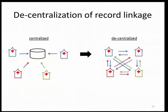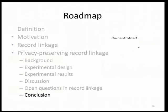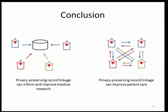Rather than doing a single record linkage at once, you have to do record linkage with each different institution from which you'd like to retrieve records, making it more computationally expensive. Adapting record linkage protocols to work in a decentralized setting is also an open challenge. In summary: in the centralized setting, privacy-preserving record linkage can inform and improve medical research by providing cleaner aggregated data sets for accurate answers; in the decentralized setting, privacy-preserving record linkage can improve patient care by allowing providers to get a more complete view of a patient's history, enabling better care and minimizing replication of services.